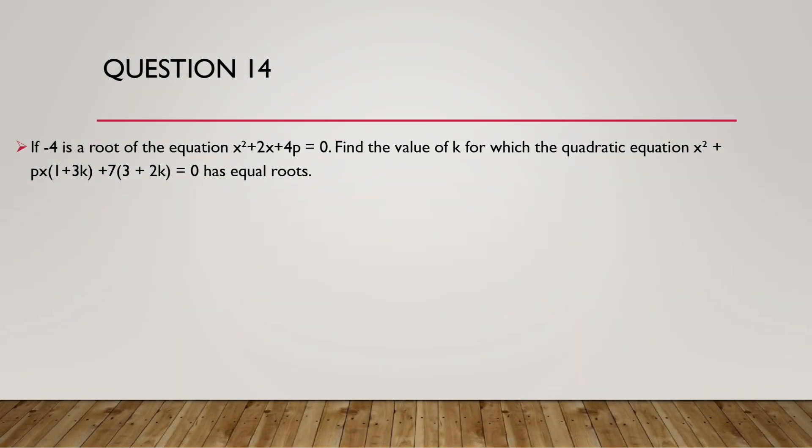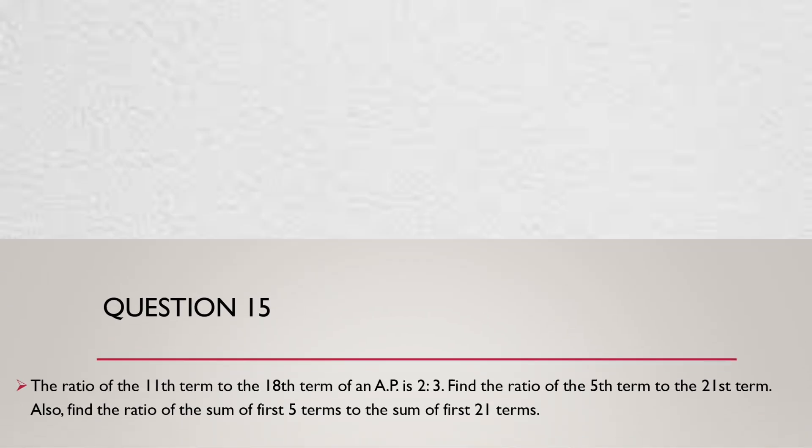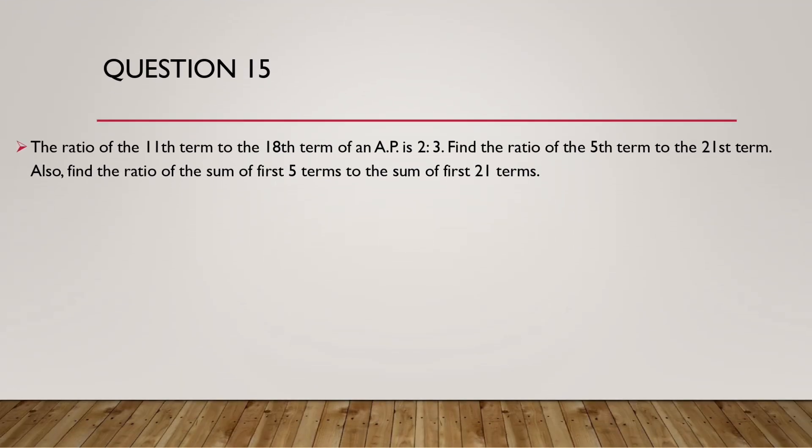Question 14. If minus 4 is a root of the equation x square plus 2x plus 4p equals 0, find the value of k for which the quadratic equation x square plus px bracket 1 plus 3k plus 7 whole bracket 3 plus 2k equals 0 has equal roots.